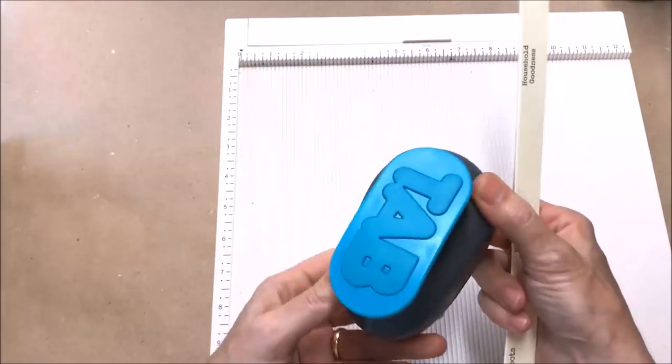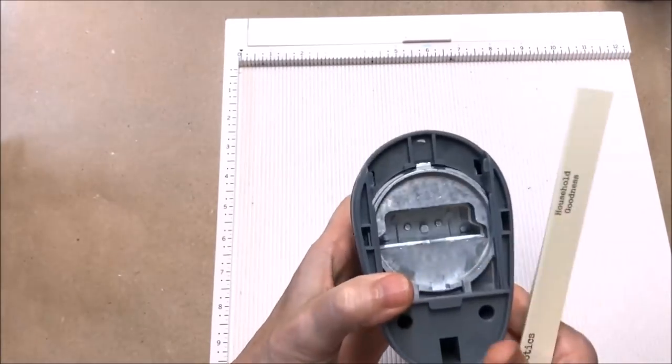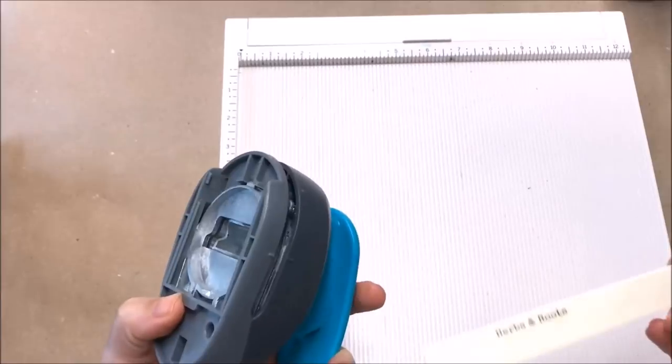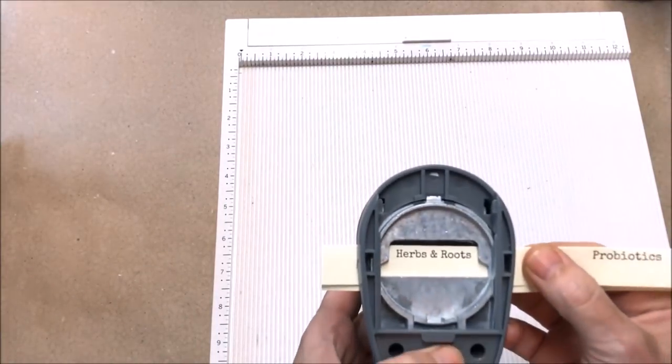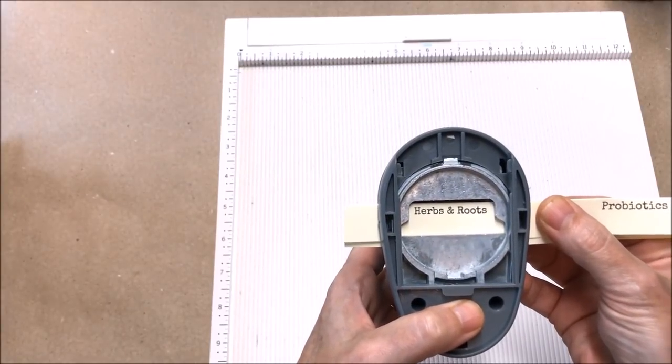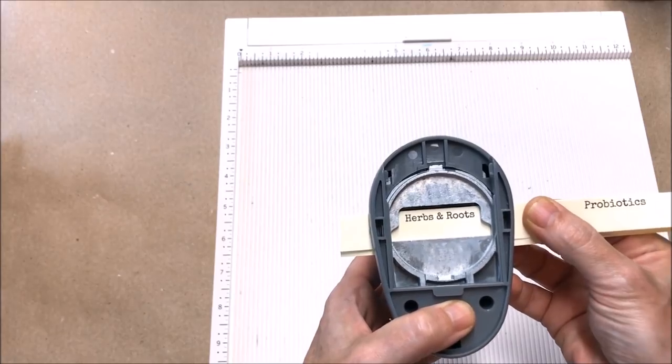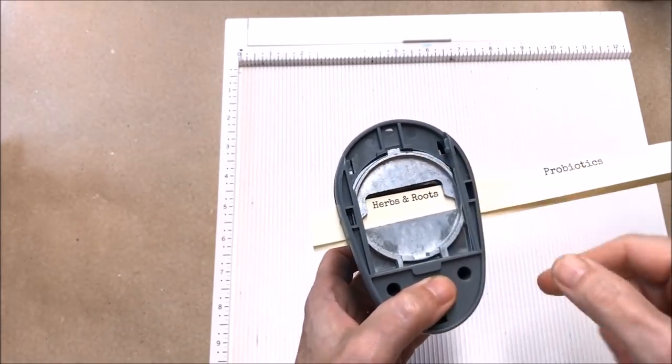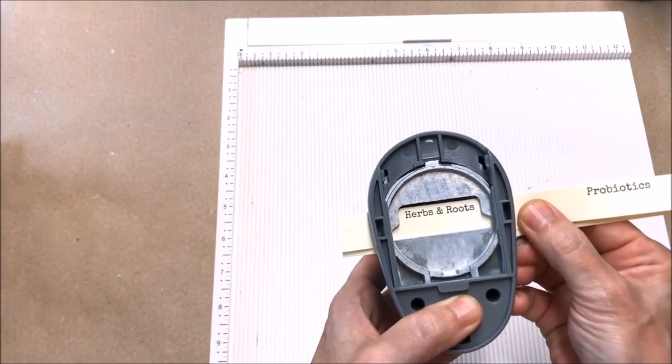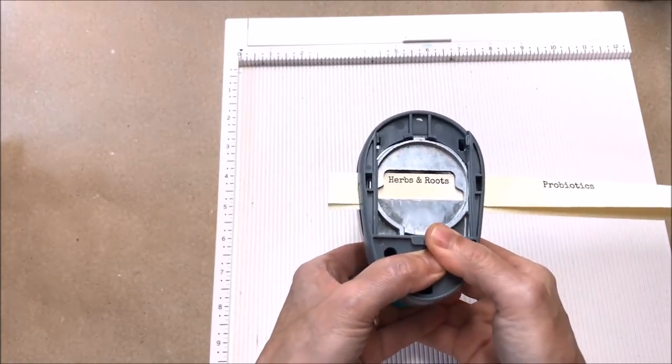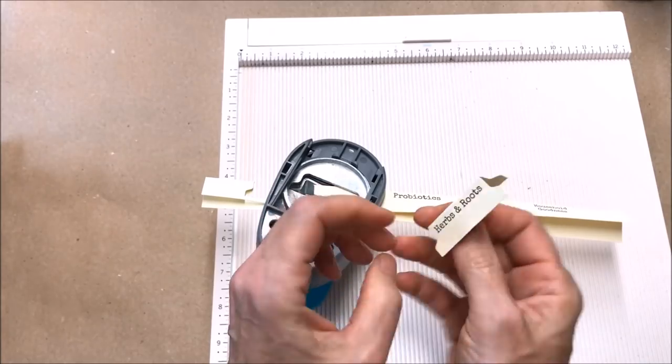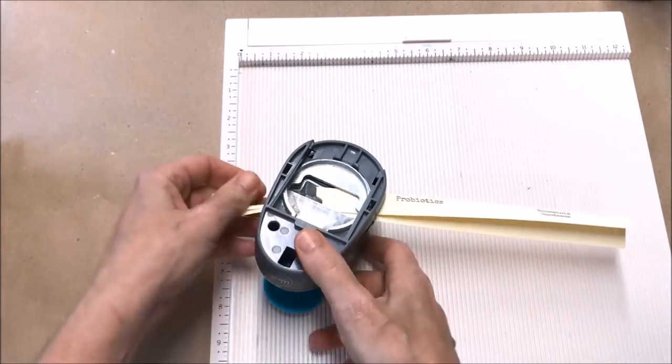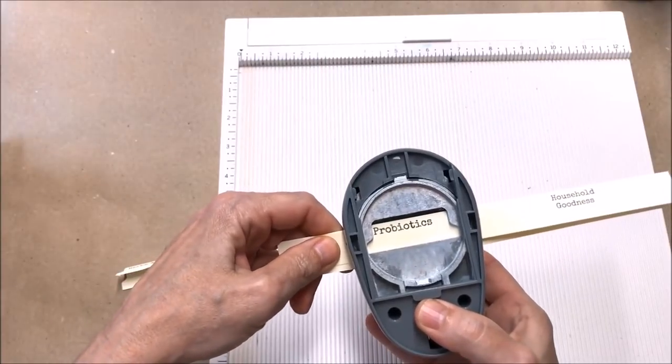Then this paper punch is my trusty We Are Memory Keepers tab punch. For this, I am going to center it and make sure that the paper on the fold is not above the edge of this so that it doesn't cut it along the fold. That punched out the front and back of the tab.